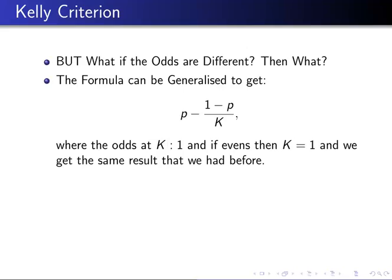You can generalize the formula: the optimal bet size is p minus (1 - p) / k, where the odds are expressed in the format k-to-one. So in a horse race at seven to one, k equals seven. Note that if the odds are even, k equals one, and plugging k = 1 in gives the same result as before. This is fantastic — we're no longer restricted to evens odds.